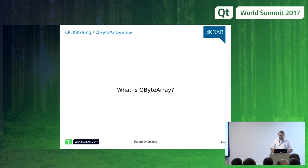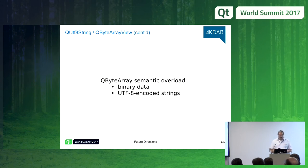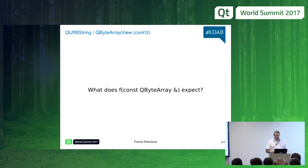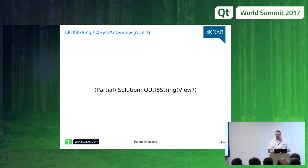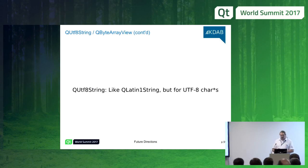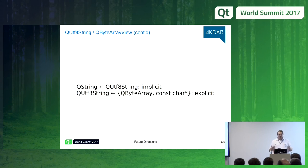Another area I'm thinking about is doing something about QByteArray. QByteArray doubles as a UTF-8 string and a binary data container. So when a function takes a QByteArray, we don't know whether it expects UTF-8 text or binary data. A partial solution would be a QUTF8StringView — similar to QLatin1String but for UTF-8 characters. It would have an implicit conversion to QStringView, but you would not be able to implicitly construct one from a const char* or a QByteArray.